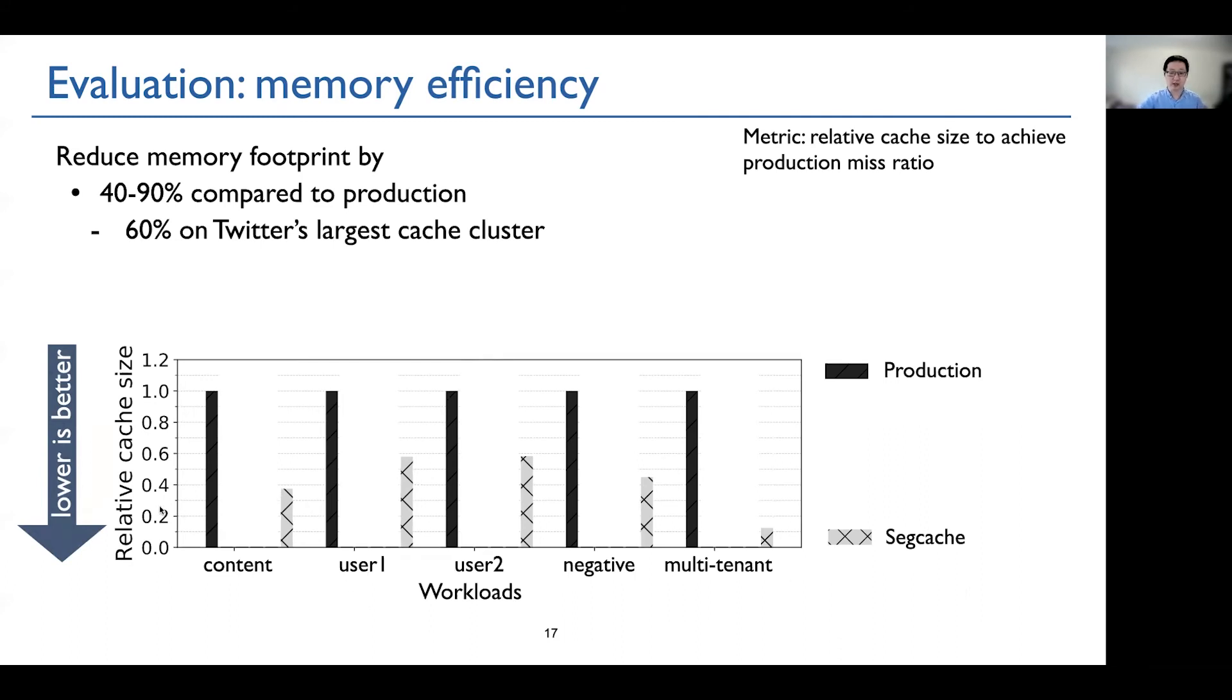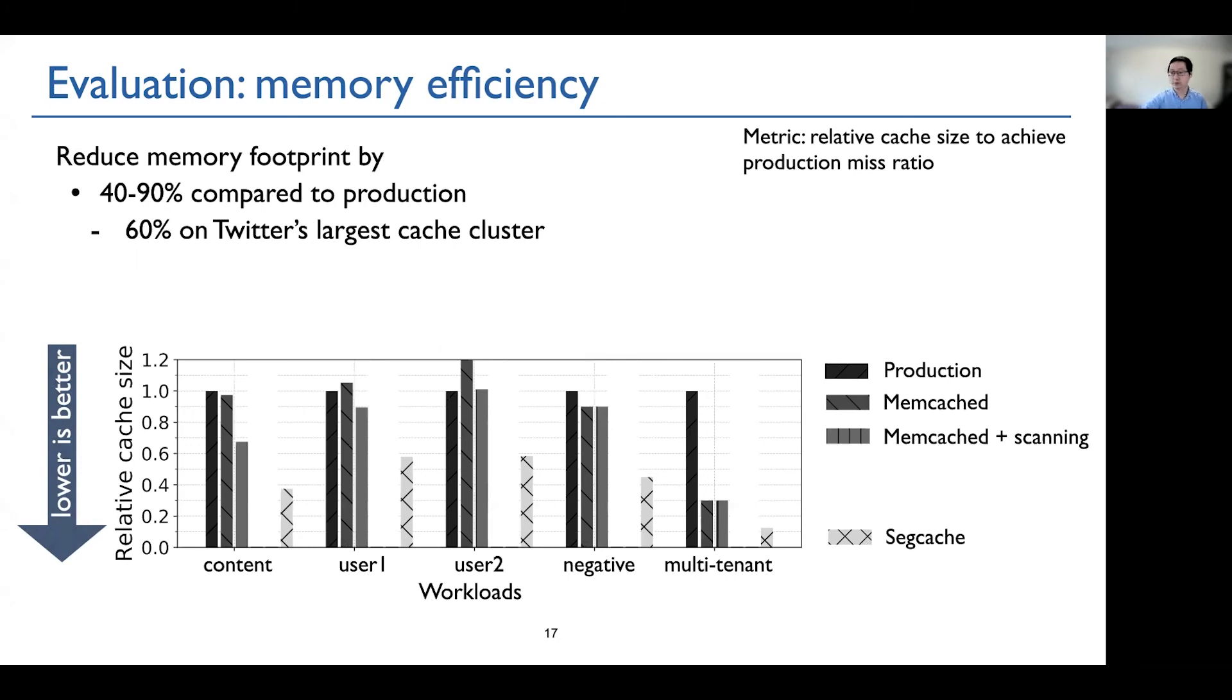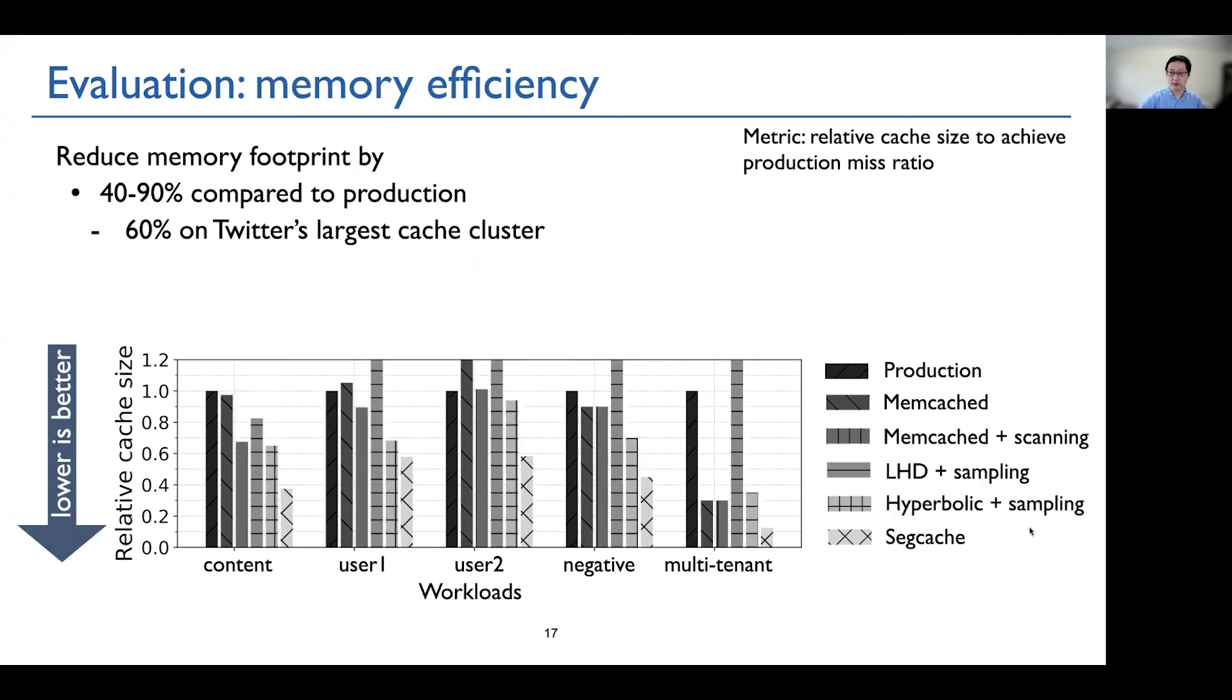Compared to memcached, memcached plus scanning for expiration and two research systems, Segcache reduces memory footprint by 22 to 60 percent compared to the state-of-the-art.